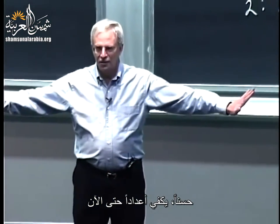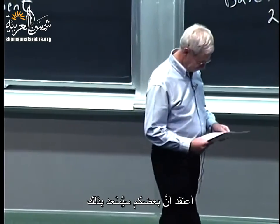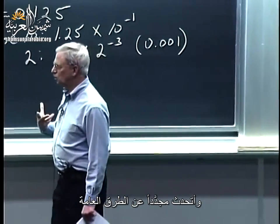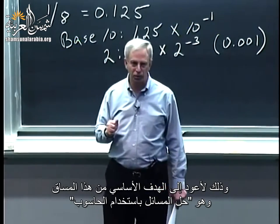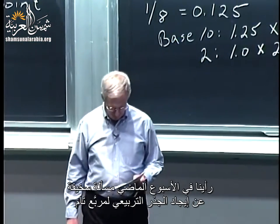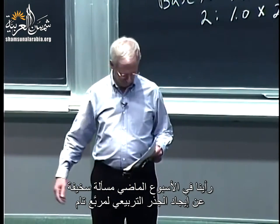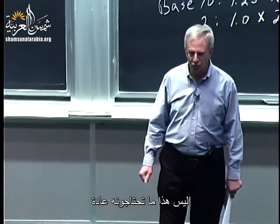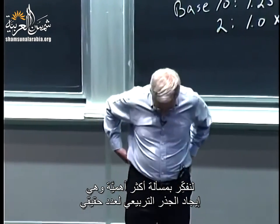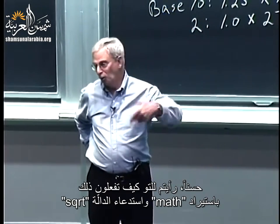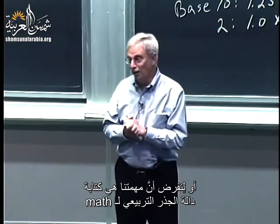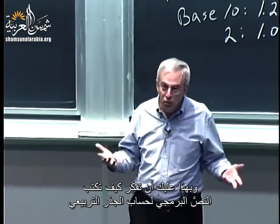Enough of numbers for a while. I now want to get away from the details of floating point and talk about general methods, returning to the real theme of the course — solving problems using computers. Last week we looked at the rather silly problem of finding the square root of a perfect square. Let's think about the more useful problem of finding the square root of a real number. You've just seen how: import math and call sqrt. Let's pretend we didn't know that trick, or that it's your job to implement math — so you need to figure out how to implement square root.